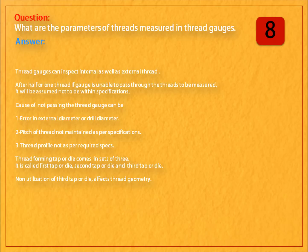Thread forming tap or die comes in sets of three. It is called first tap or die, second tap or die, and third tap or die. Non-utilization of the third tap or die may affect thread geometry.